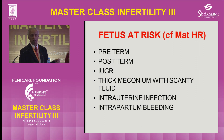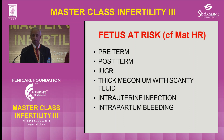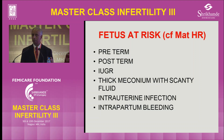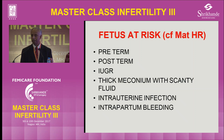The key risk conditions are preterm, post-term, growth restriction, thick meconium with scanty fluid, intrauterine infection, and intrapartum bleeding. If there is intrapartum bleeding, there is separation of the placenta which reduces the placental surface. Blood seeps into the myometrium, causes irregular contractions, and the baby gets hypoxic much quicker — depending on whether bleeding is due to placental separation or other causes.